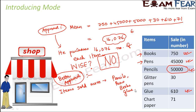He decides that this time he will not buy glitter pens or chart paper at all, since only 30 or so are being sold anyway. Instead, he will buy more pencils, pens, books, and glue. This approach is definitely going to be better — he will not have items accumulating in his shop without being sold.